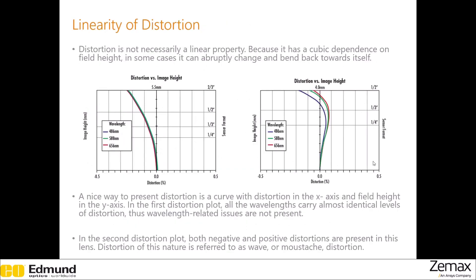These are what typical distortion curves look like. You can plot distortion on the x-axis and image height on y. In the first plot, all three colors have similar amounts of distortion. But in the second one, all of them change shape, meaning both positive and negative distortions are present in the system. This is obviously because of the cubic dependence. This kind of wavy distortion is called wave, or mustache, distortion.